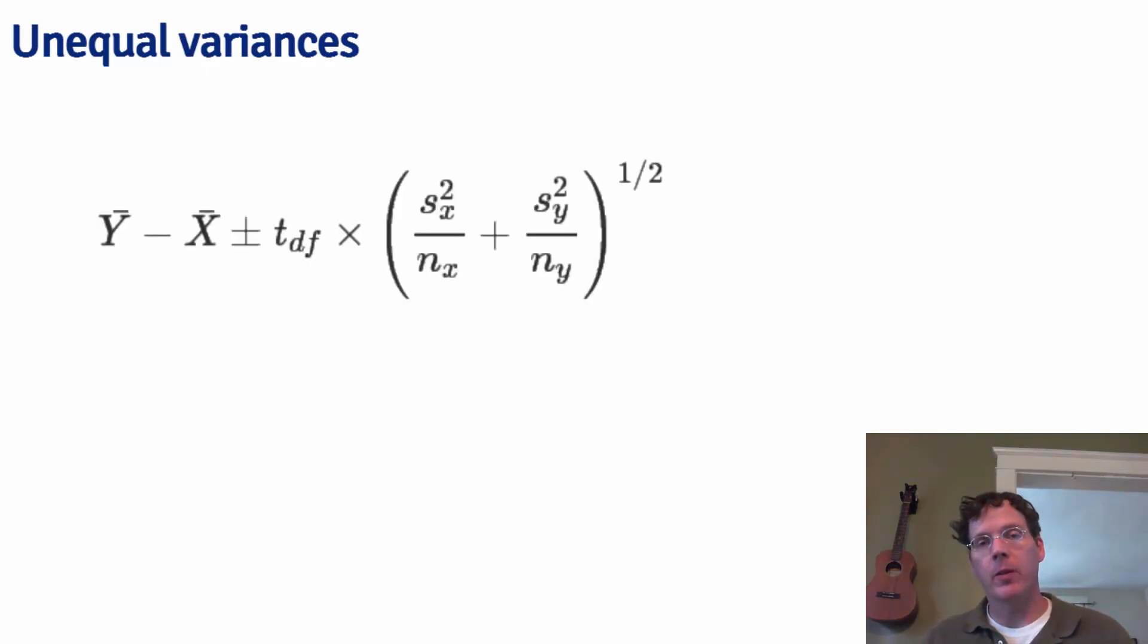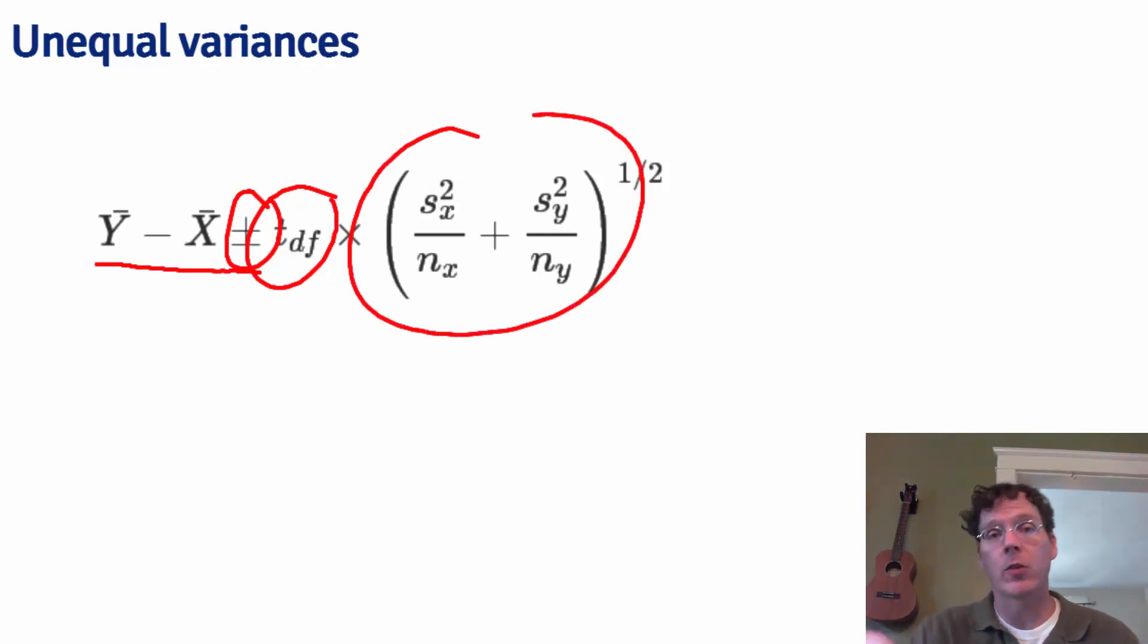So hopefully the formula for the unequal variance case looks pretty familiar to you. It's the difference in the means plus or minus a t quantile times a standard error. The standard error is calculated assuming there's a different variance in each of the two groups.